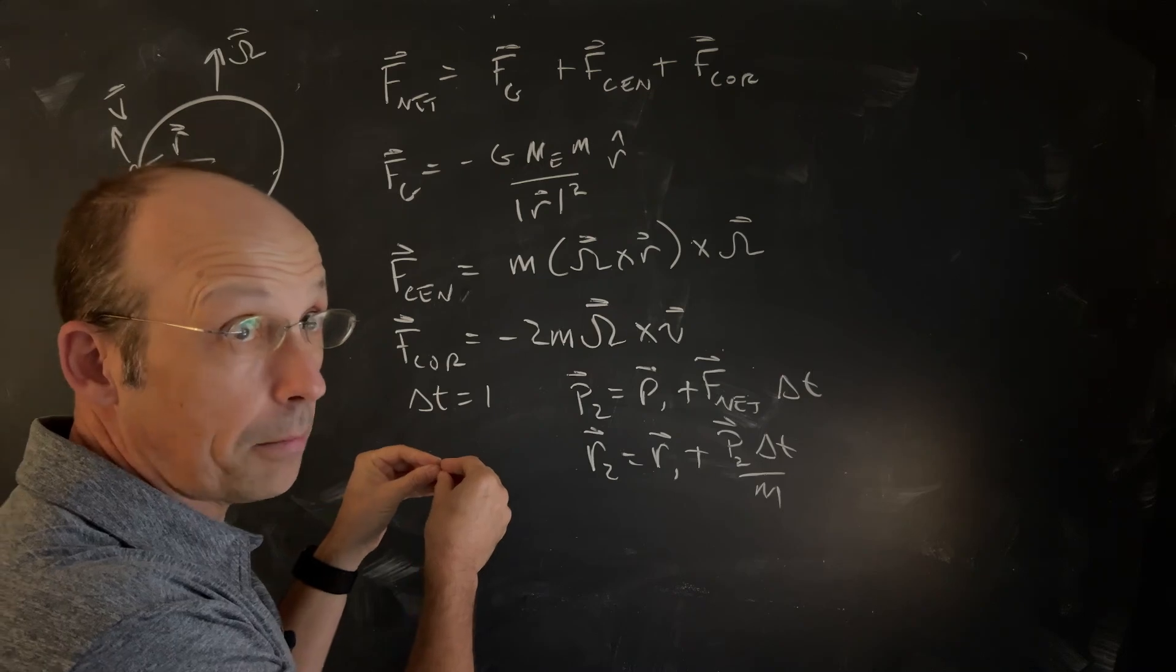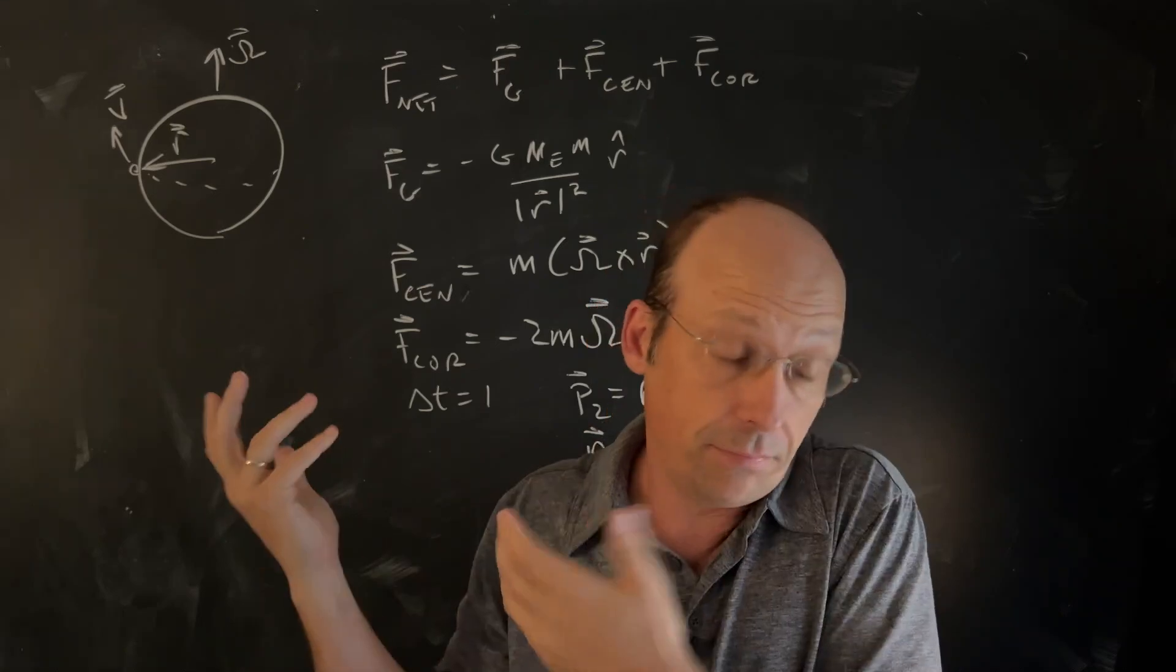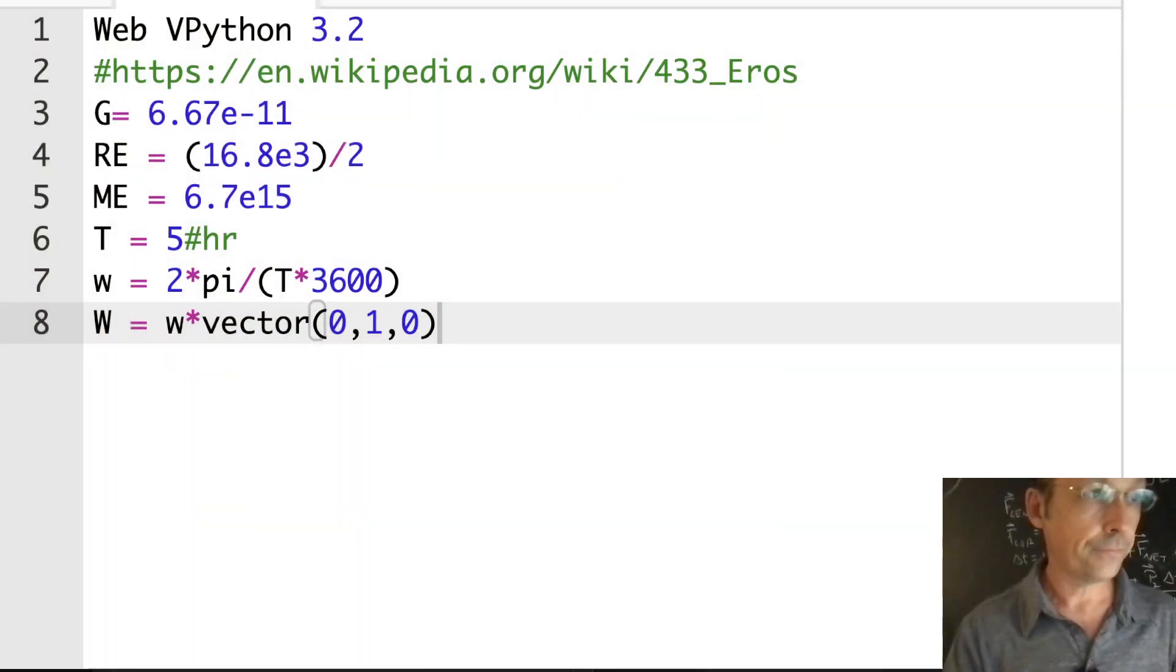I already picked out some parameters and typed them into Python so I didn't have to look those things up. I looked it up beforehand. I have the gravitational constant G, the radius of Eros. I looked up the mass. The period is 5.27, but I'll use 5.5. Lowercase w is my angular velocity value, and capital W is capital omega because I'm not typing out omega.